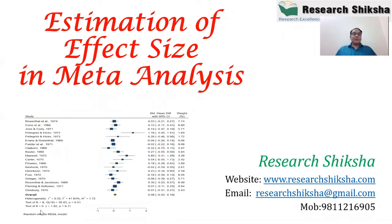In the forest plot, we have different columns. The first column is the study name, and in the second column you can see some boxes with lines. Some of the boxes are very big and some are very small. The big boxes mean the weight of those studies is high. The logic is simple: if your sample size is high, the probability that your values are closer to the actual value is also high — the accuracy of the result is high.